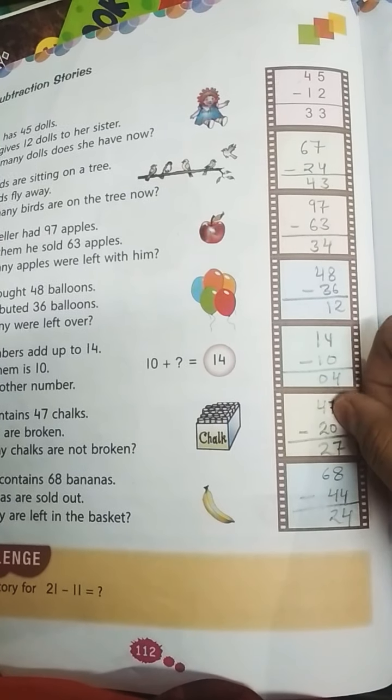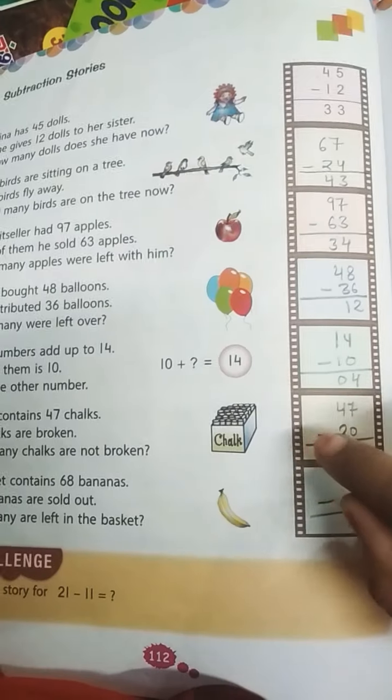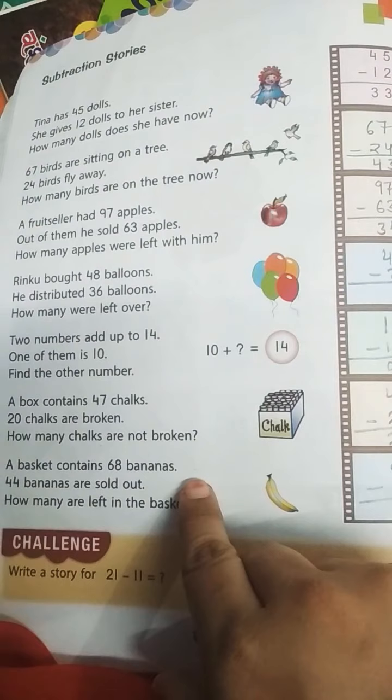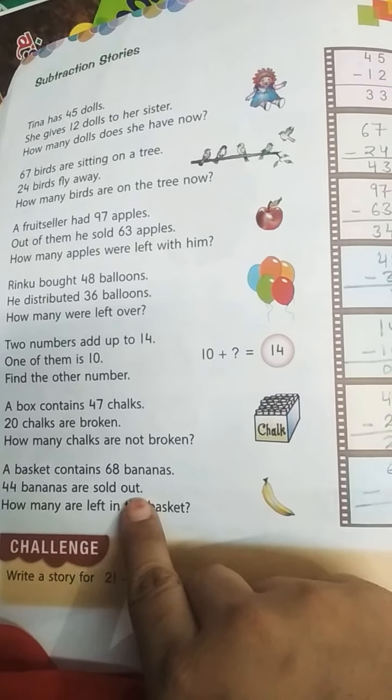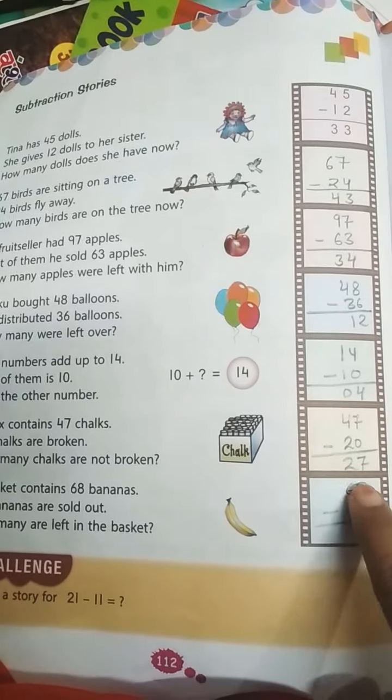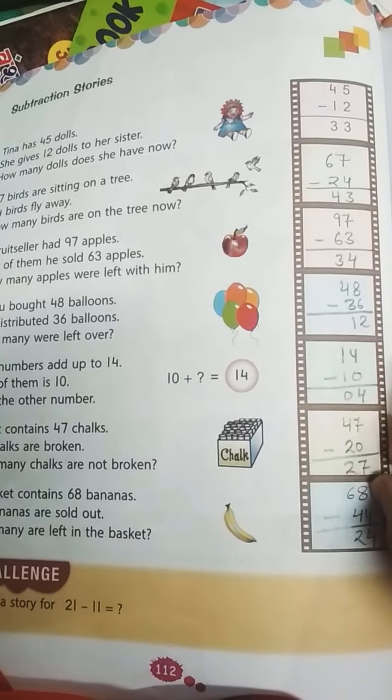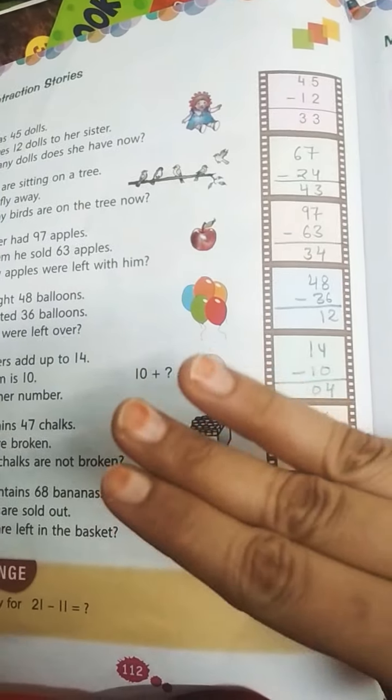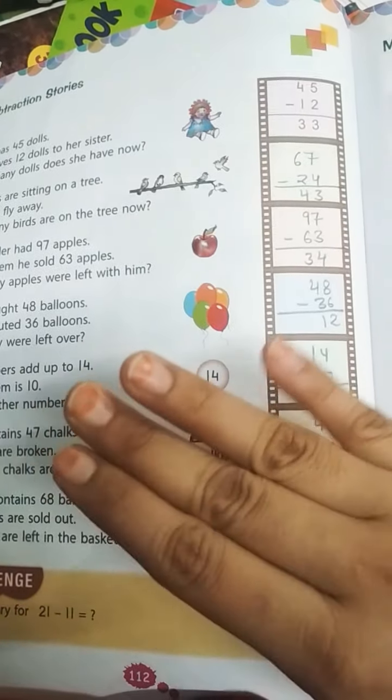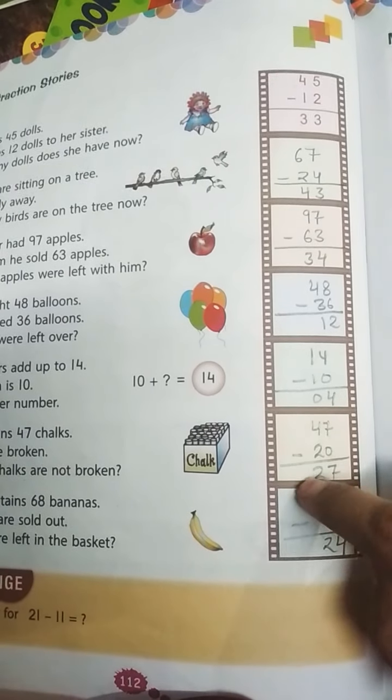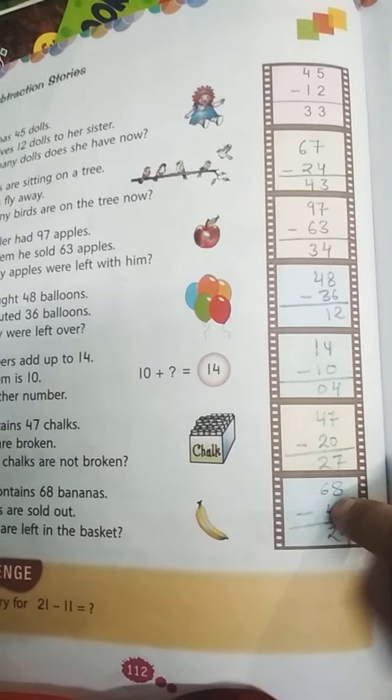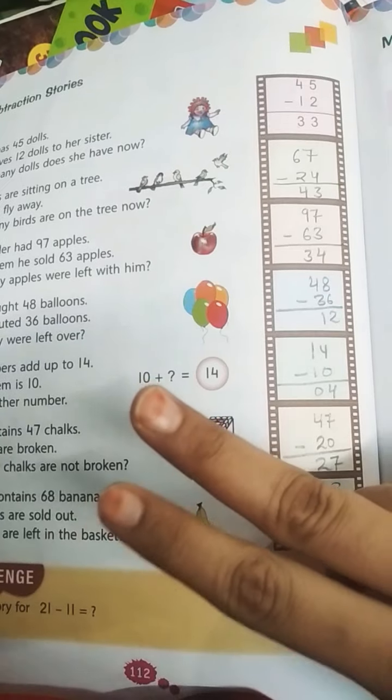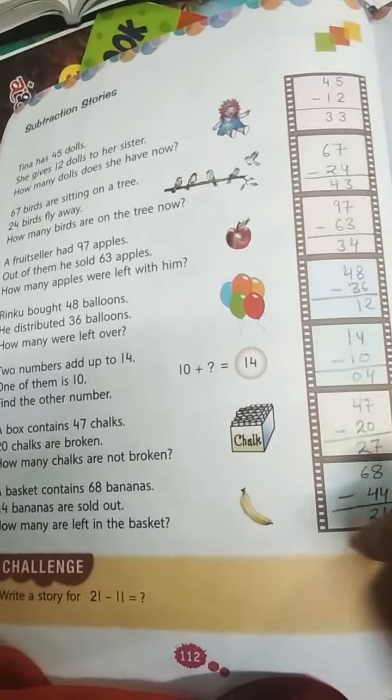A basket contains 68 bananas. 44 bananas are sold out. How many are left in the basket? So 68 minus 44. 8 minus 4, you can count after 4, 5, 6, 7, 8, so there is 4. You can write 4. 6 minus 4, the same method, count after 4 to 6, so 5, 6, that's 2. Got it?